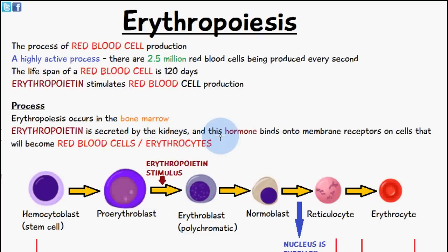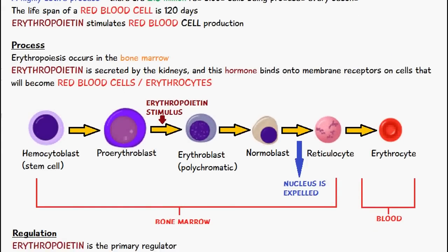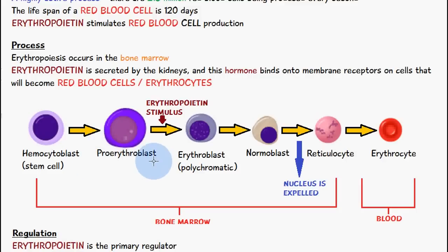This hormone binds onto the membrane receptors on cells that will become red blood cells or erythrocytes. The initial stem cell responsible for the production of red blood cells and white blood cells is the hemocytoblast. It will then form a pro-erythroblast, at which point the erythropoietin stimulus binds onto receptors, and then a polychromatic erythroblast is formed — you can see by the number of chromosomes that it's polychromatic.